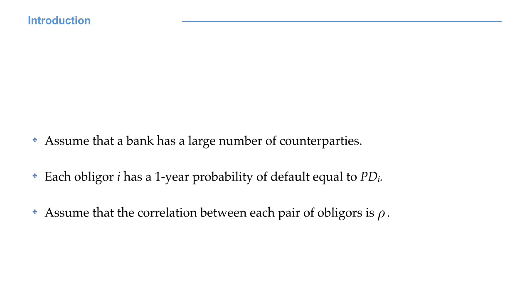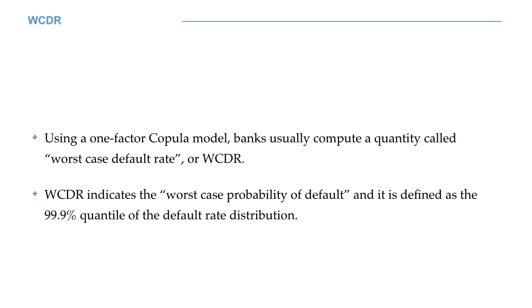In the following we discuss the one year time horizon, but all the computations can be easily adapted to other time spans. A key quantity for the computation of capital requirements under the internal rating based approaches is the so-called worst case default rate. This is defined as the 99.9% quantile of the default rate distribution.